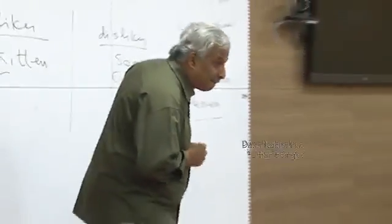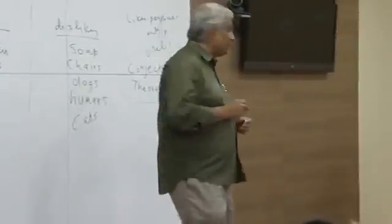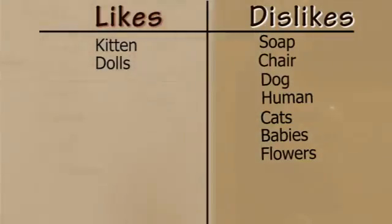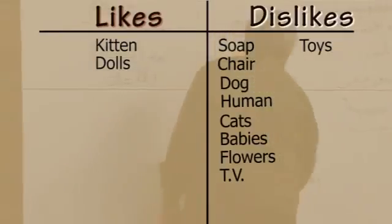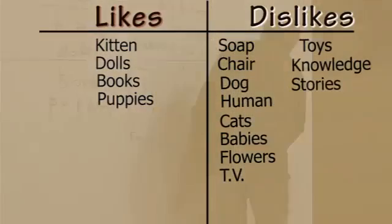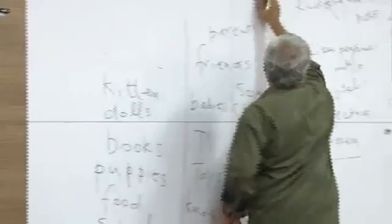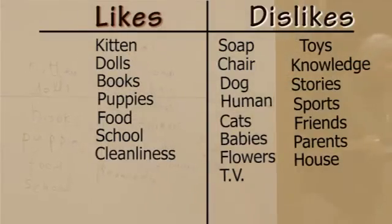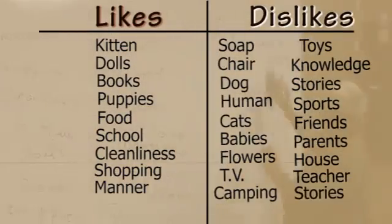Does she like human beings? Does she like humans? She likes cats, dolls, babies, flowers, TV, food, puppies, knowledge, stories, sports, school, friends, parents. She likes a house, cleanliness, shopping, manor, camping, nature.